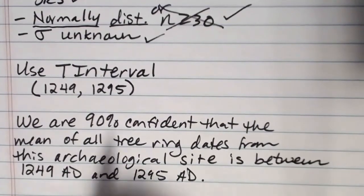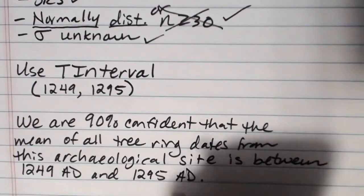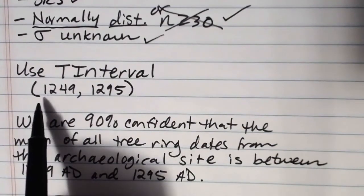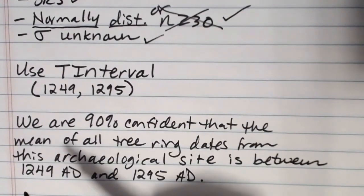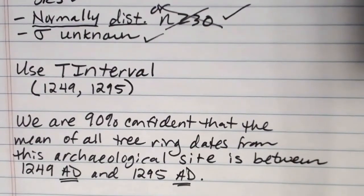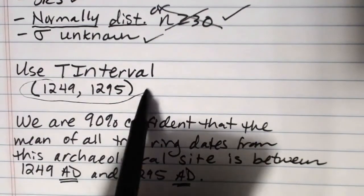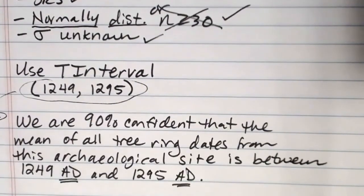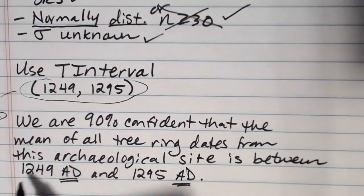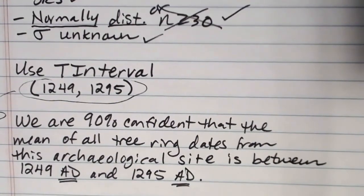Is between 1249 AD and 1295 AD. If there are units associated with your interval, you should include these in your description. Here we were looking at dates in AD. So we want to put AD there. If we had done something and these were in feet or degrees Celsius or whatever it was, you would want to include those units as part of your interpretation. But this helps people who don't have a stats background take this interval and put it into its proper context. We're pretty sure that if we were to look at all the tree ring dates in this site, the mean year of those trees would fall between 1249 and 1295.